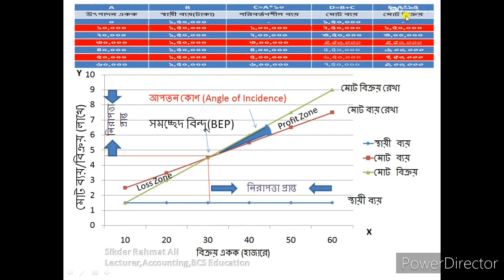We had a D column, a MOT2, and there were an E column and a B column. The B column is a break-even chart.